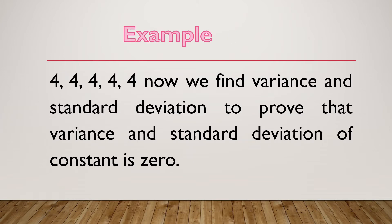Now we need to prove this property using a simple example. We have a data set of five observations: 4, 4, 4, 4, and 4. It is clear that there is no variability among the variables. We could consider any repeated value — five fives, or a thousand repeated — but here we use five observations all equal to 4.